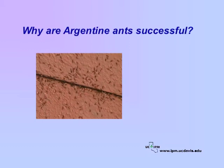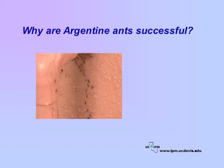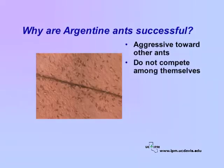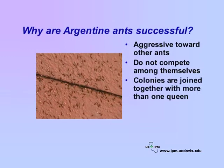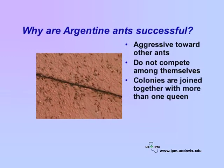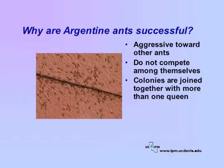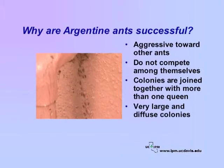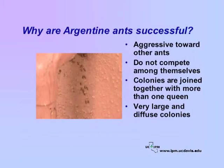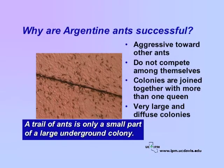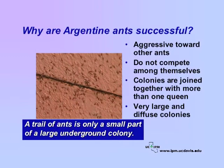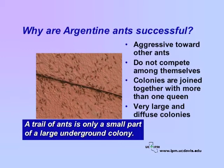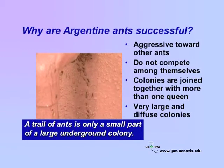Argentine ants have taken over California, or at least it seems that way, because they are aggressive toward other ant species and do not compete among themselves. Several small colonies are joined together creating larger super colonies, and colonies may have more than one queen. Argentine ants nest underground in soil, just below the surface. Nests may be shallow, but colonies are very large and diffuse. When you see a trail of ants, keep in mind that you are only seeing a small fraction of a large underground colony. When trying to manage ants, consider the whole colony, not just the ants you see.